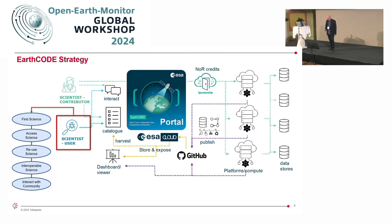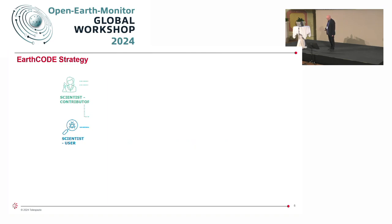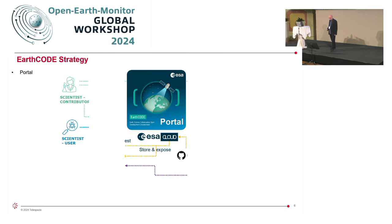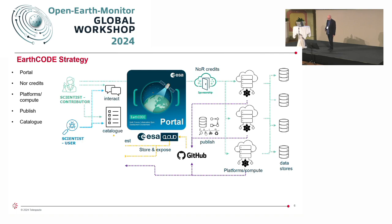Looking at the overall strategy, we can break down some of the basic building blocks within EarthCode. ESA R&D projects will be required to publish to EarthCode, so there will be good population of the catalogue. The portal will be provided as a single point of entry to EarthCode, giving access to the underlying platforms. NOR will be used to provide credits to access those platforms to help develop and execute experiments. Publishing will be provided via GitHub, and when artefacts are accepted they'll be moved into the catalogue so they can be discovered and accessed later. A dashboard of views will also be provided to present experiments in a way suitable to end users.